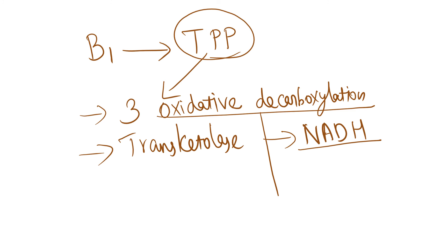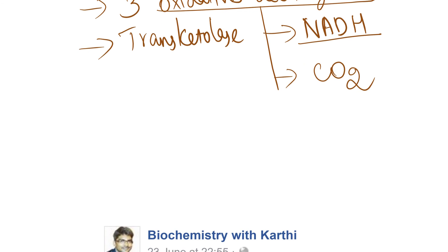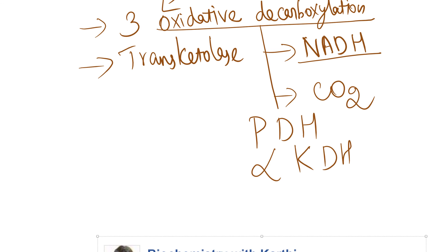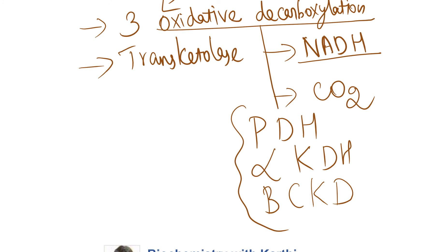There is also decarboxylation, meaning there will be release of CO2. Can you name certain reactions in which both NADH and CO2 are released? Pyruvate dehydrogenase, alpha-ketoglutarate dehydrogenase, and BCKD — branched chain keto acid dehydrogenase. These are the 3 oxidative decarboxylation reactions catalyzed by vitamin B1.